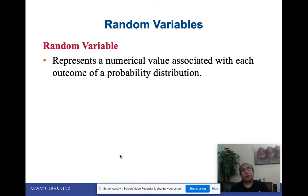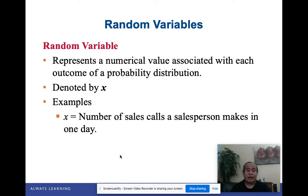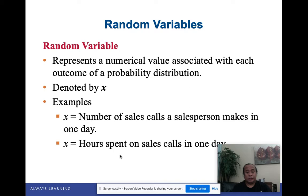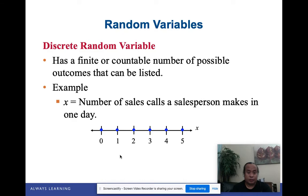Let's start with random variables. In any experiment, you are interested in one specific characteristic — like, say, if you want to determine the number of cars that pass through. That would be your variable, usually represented by x. It represents a numerical value that can take on whole number values or decimal values. For example, the number of sales calls a person makes in one day only takes whole number values. This leads us to the two types of random variables: discrete, which has a finite or countable number of possible outcomes, and continuous.